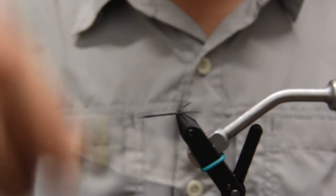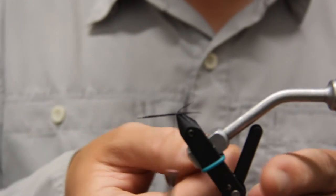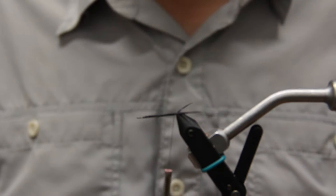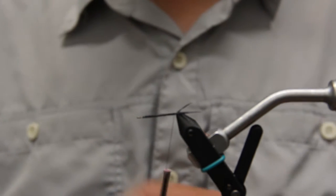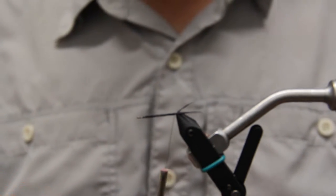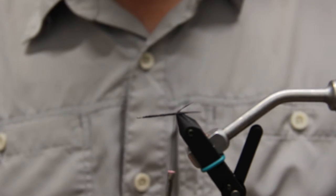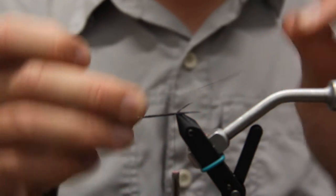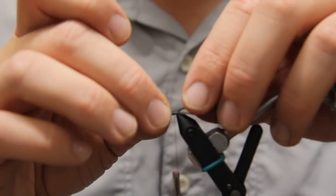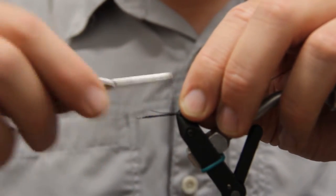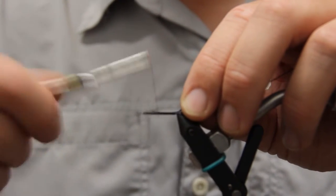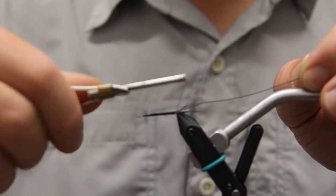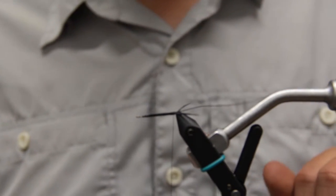I'm going to wrap back to the very back. Our next step, we're going to tie in our wire. And I just use a medium black ultrawire, just going to tie that in along the shank and facing back towards the tail.